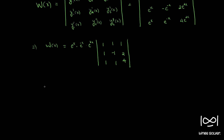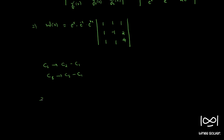Now we perform column operations: C2 → C2 minus C1, and C3 → C3 minus C1. This column operation does not change the value of the determinant. So W(x) equals e^x · e^(-x) · e^(2x) times the determinant of the matrix with rows [1, 0, 0], [1, -2, 1], [1, 1, 3].